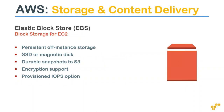Amazon Elastic Block Store (EBS) is the block-level storage provided by Amazon. Think of it as similar to external disks, SAN disks used in on-premise data centers, but it offers much more - snapshot capabilities, encryption, and a combination of SSD disks and magnetic disks. You can have multiple disk types in your EBS volumes.